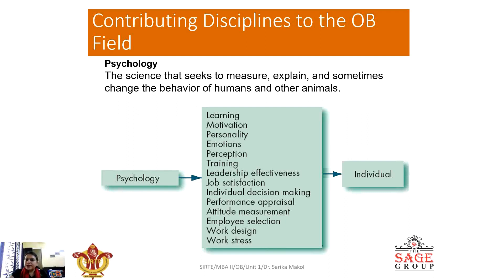Motivation can be done at the group level as well as individual level, but individuals must be motivated first, only then can the group be motivated. Everybody has their own personality at an individual level. Every individual has their own emotions, feelings, and perceptional level. That is why all these parameters are related to the individual level.